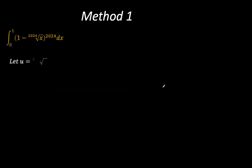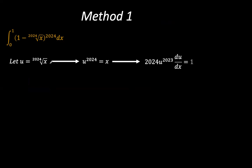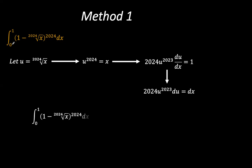Let u be equal to the 2024th root of x, such that u to the power of 2024 equals x. So 2024 times u to the power of 2023, du/dx, equals 1. Therefore, 2024 u to the power of 2023 du can be substituted for dx. When x equals 0, u equals 0; when x equals 1, u equals 1.